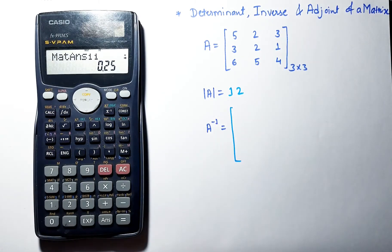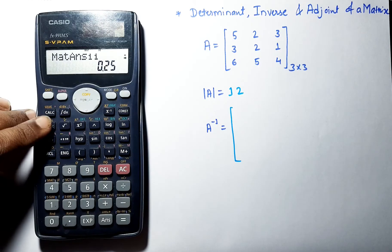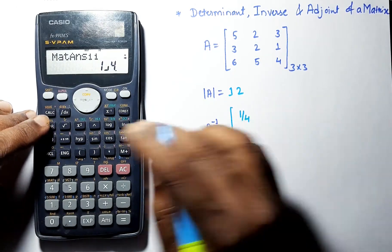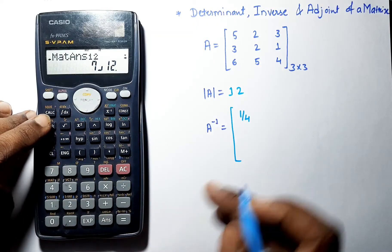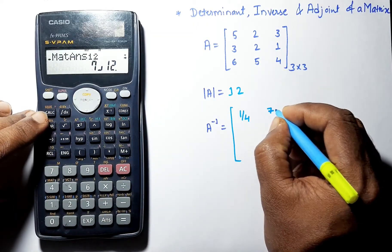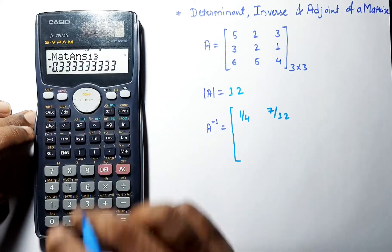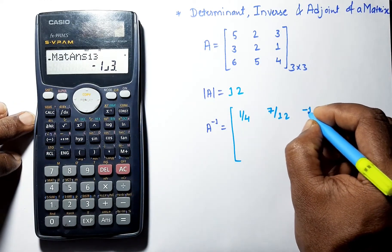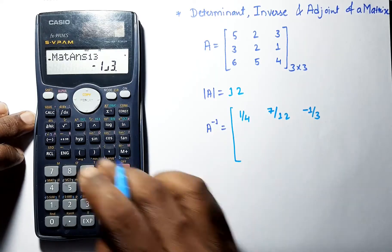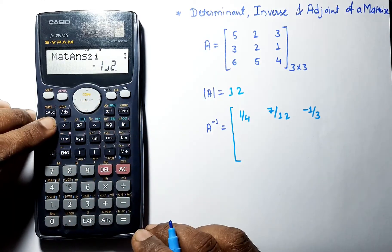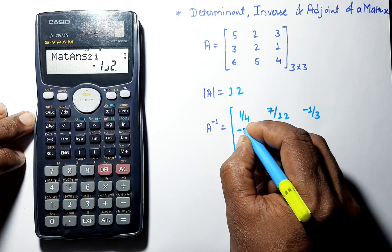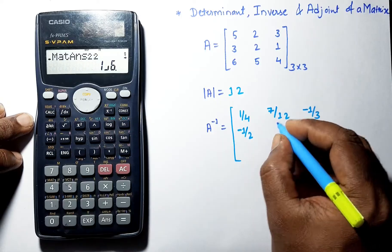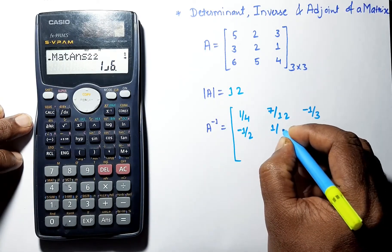Let's note down these values — we'll convert them into fractions. The first value is 1/4, the next value is 7/12, the next value is −1/3, the next value is −1/2, and 1/6.